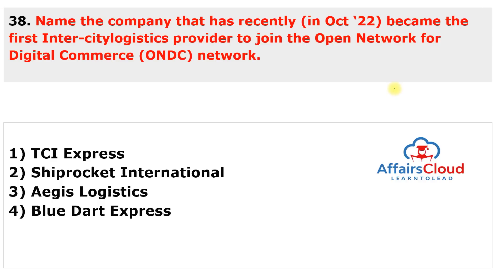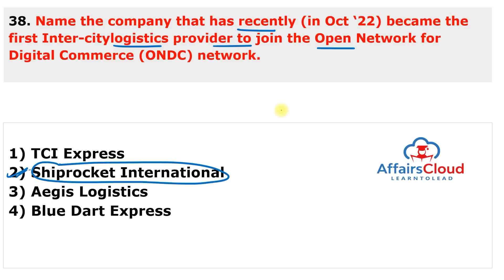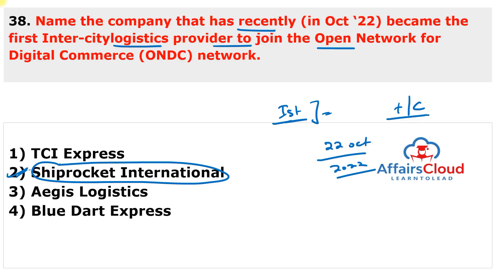Next question: which company recently became the first intercity logistics provider for the digital commerce network? The answer is Shiprocket International. Shiprocket International went live on the Open Network for Digital Commerce (ONDC) network and became the first intercity logistics provider to join it. This enables sellers across all segments to ship their products to towns as well as cities of India. The first successful transaction via Shiprocket was fulfilled on 22nd October 2022.